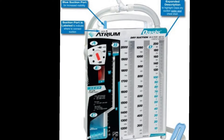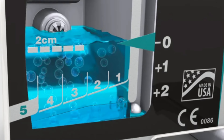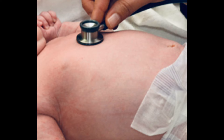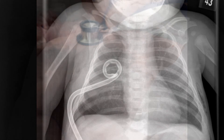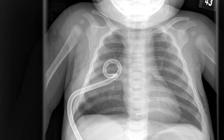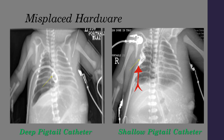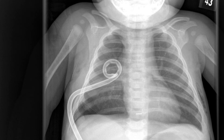You can then connect to the pre-assembled drainage system and look for bubbling in the water seal. Throughout the procedure, you will want to perform cardiopulmonary monitoring and assess the patient before and after the procedure is completed. You will also want to obtain a chest X-ray for verification of catheter placement and resolution of the pneumothorax. You will want to make sure that the catheter is not too shallow, as seen here, or too deep, as seen here.